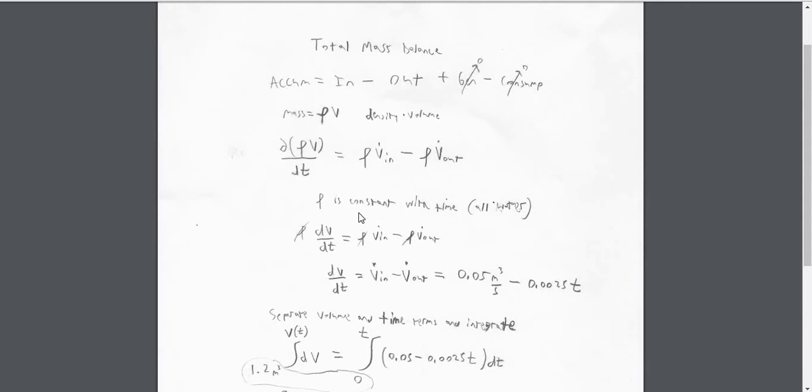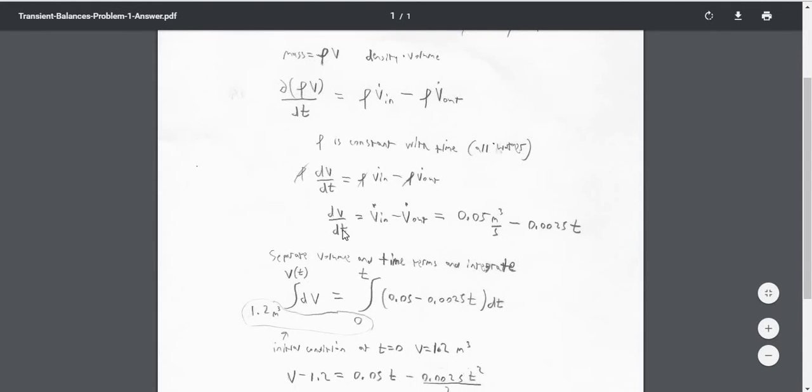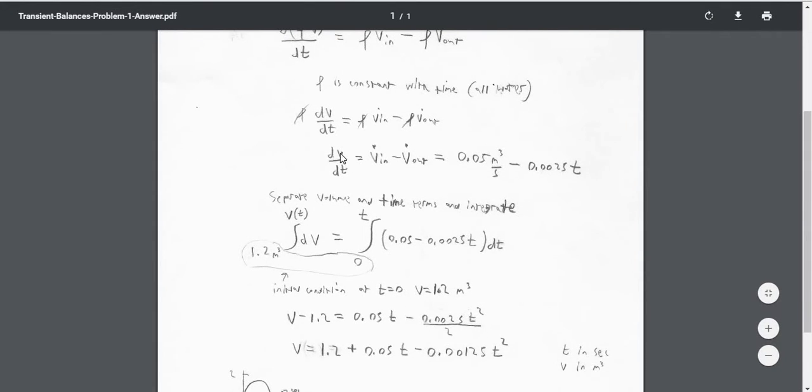We're using water the entire time, so we know the density is constant with time. We can actually bring this out of the derivative, and then it'll all cancel. So we have our volume with respect to time is equal to the volumetric flow rate coming in, minus the volumetric flow rate coming out.